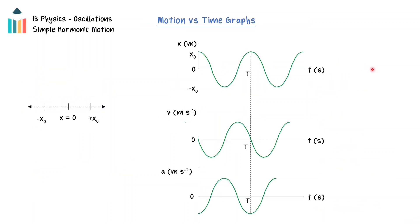The graphs of motion with respect to time for an object undergoing simple harmonic motion are sinusoidal in nature. If we consider the motion of a pendulum where at time equal to zero the pendulum is at the maximum positive displacement, the displacement time graph will start at positive x₀.